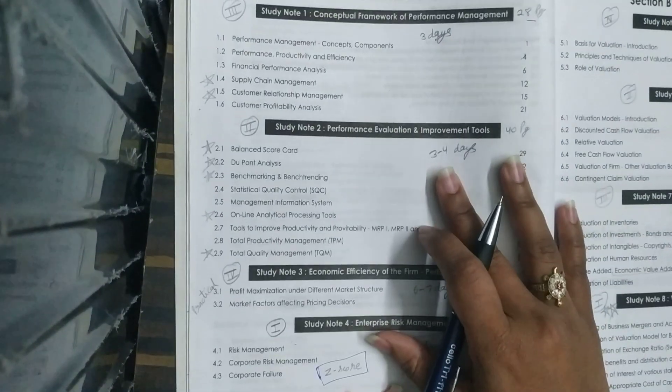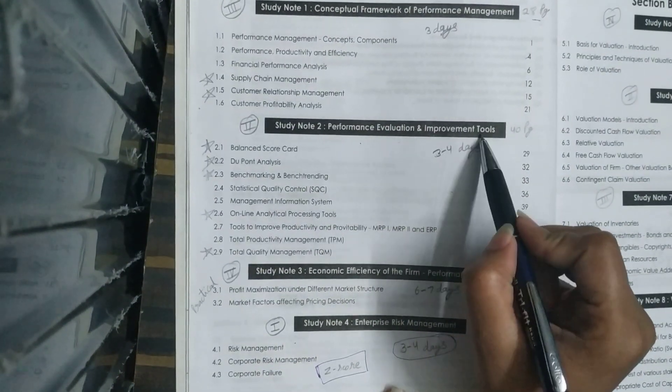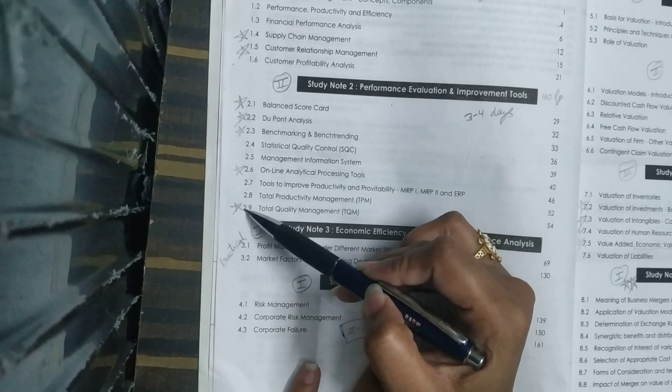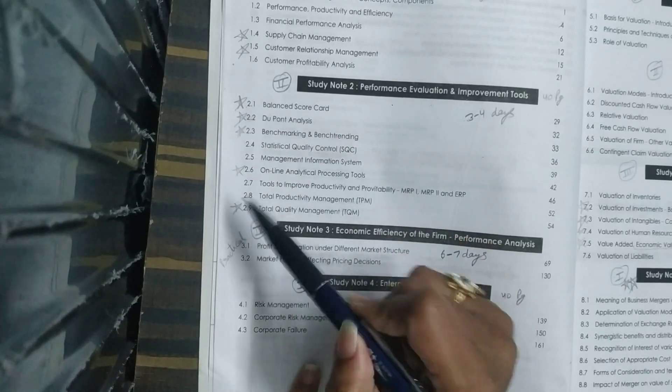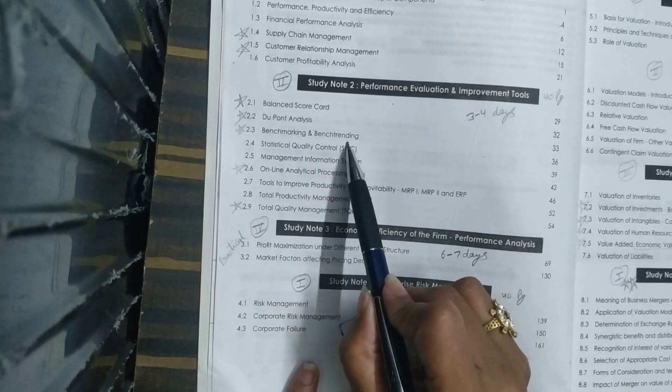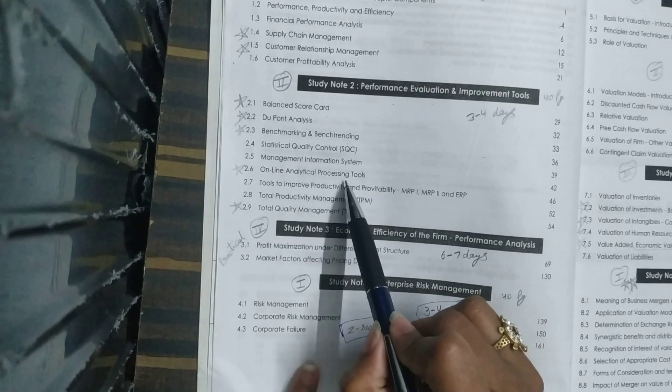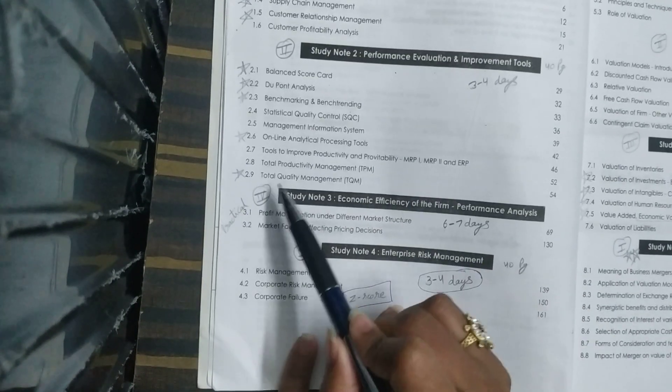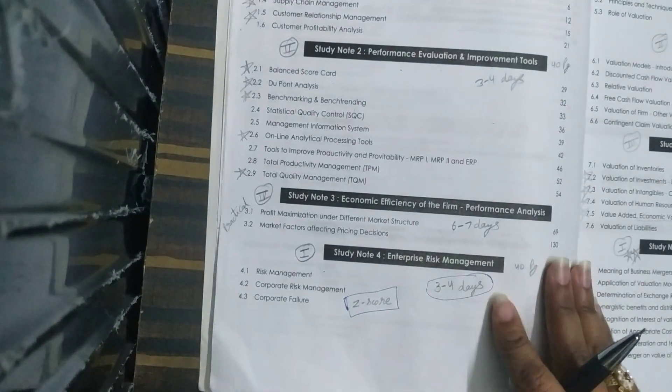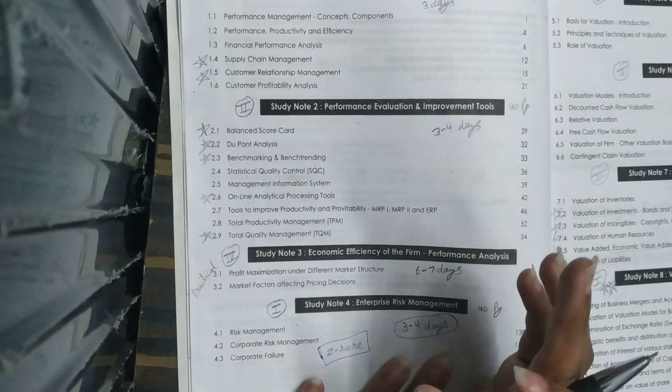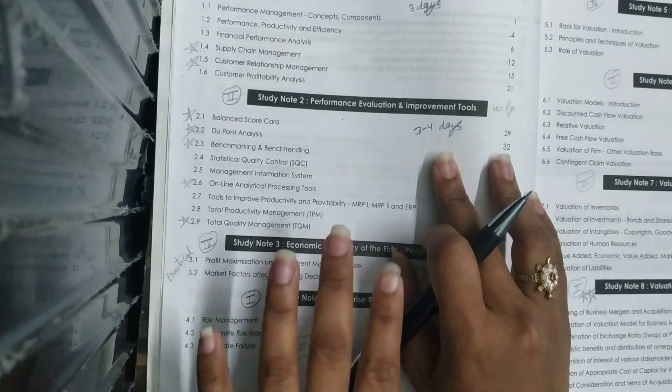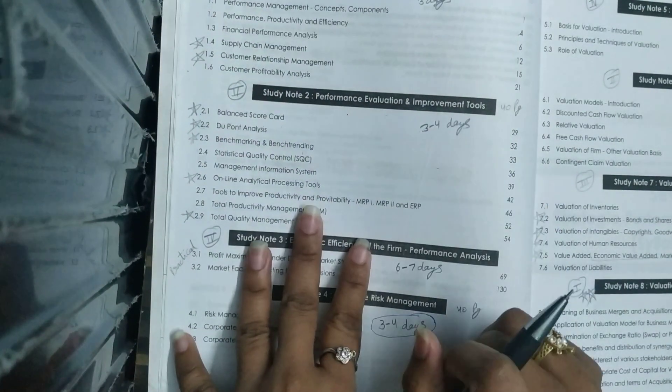The second one is Performance Evaluation and Improvement Tools, which has mainly practical questions. I have marked the topics from which exam questions come: Balance Scorecard, Due Point Analysis, Benchmarking and Benchtrending, Online Analytical Processing Tools, and Total Quality Management. These are topics that the examiner is continuously asking questions about. This chapter is 40 pages, so you can cover it in 4 days easily if you do it with notes preparation.